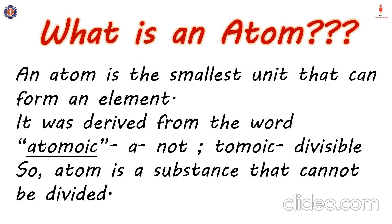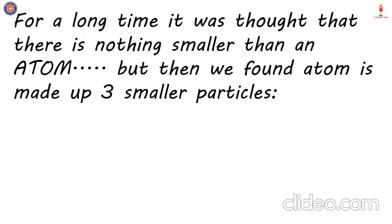Once we know that an atom is what makes up an element, the next question is: what is an atom? An atom is the smallest unit that can form an element. This was derived from the word 'a' meaning not and 'tomic' meaning divisible. So therefore an atom is a substance that cannot be further divided. For a long time it was thought that atom is the smallest particle possible, hence the name atom meaning that which cannot be further divided.